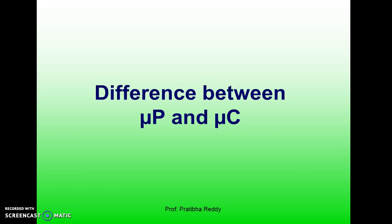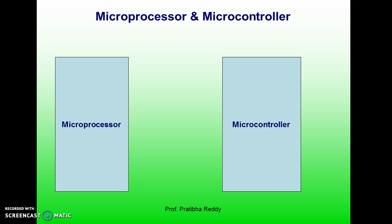Let us discuss the differences between microprocessor and microcontroller. By microprocessor is meant the general purpose microprocessors such as Intel's 8086 family or Motorola's 680X0 family. These microprocessors contain no RAM, no ROM and no input-output ports on the chip itself. For this reason, they are commonly referred to as general purpose microprocessors.